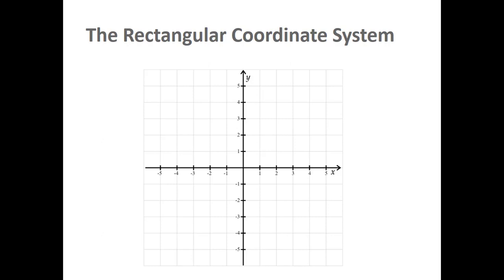We obtain this grid by intersecting the x-axis, which is the horizontal axis, and a vertical axis, which we label the y-axis, at the origin — that is the point (0, 0) of each of the axes.